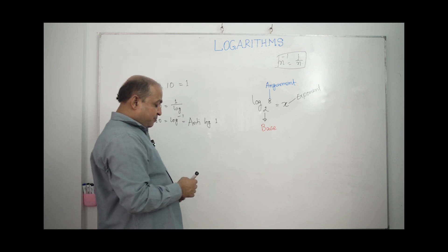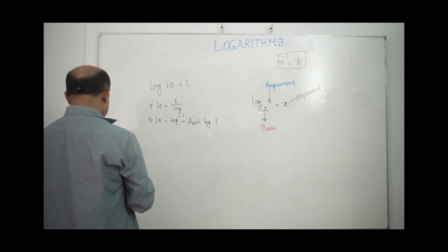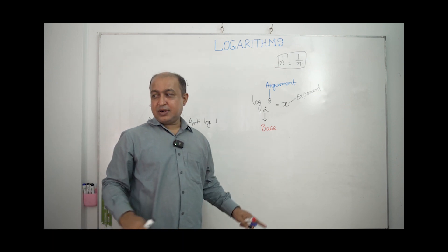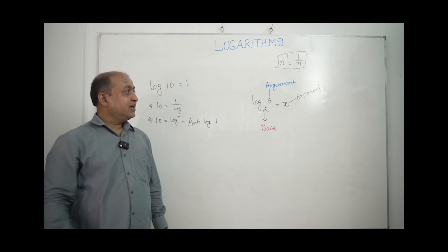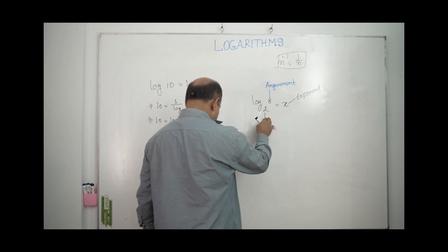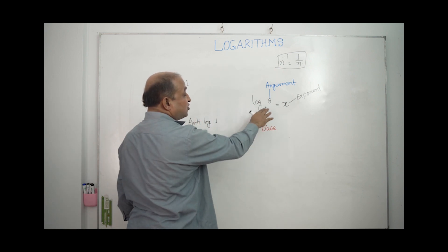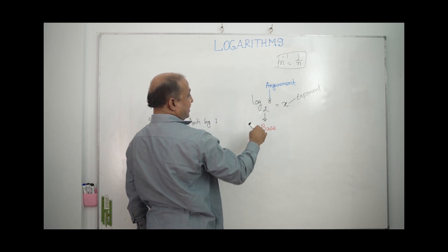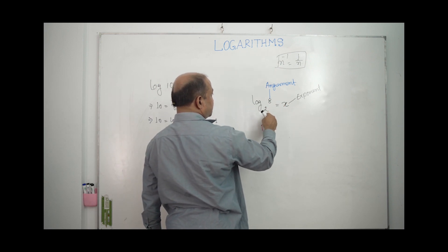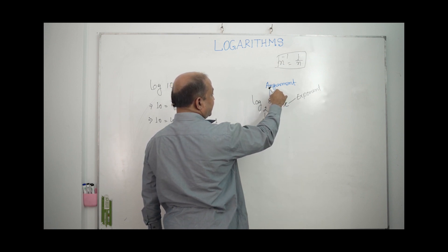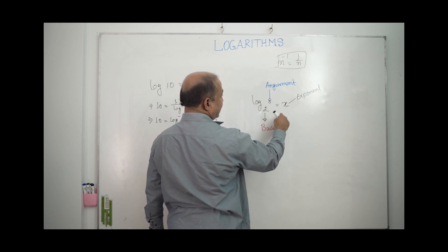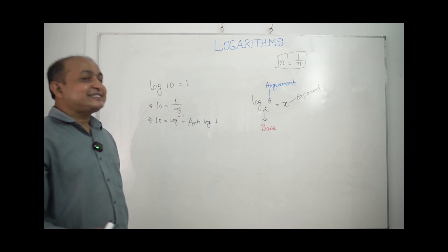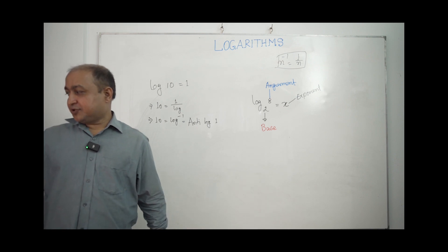Now, the basic formula example: log base 2 of 8 equals x. Base is 2, argument is 8, exponent is x. This logarithmic equation can be converted to exponential form.